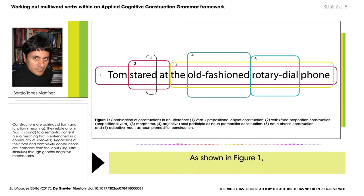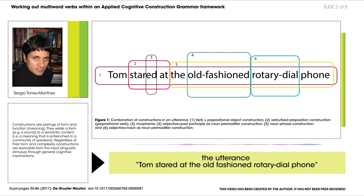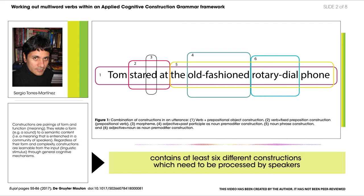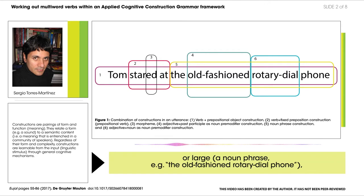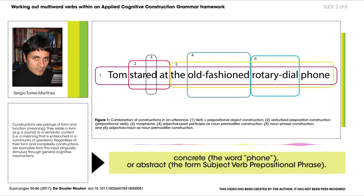As shown in Figure 1, the utterance 'Tom stared at the old-fashioned rotary dial phone' contains at least six different constructions which need to be processed by speakers to make up meaning. As can be seen, constructions can be small — e.g. a suffix such as -ed — or large, e.g. a noun phrase such as 'the old-fashioned rotary dial phone'; concrete, e.g. the word 'phone'; or abstract, e.g. the form subject-verb-preposition-phrase.